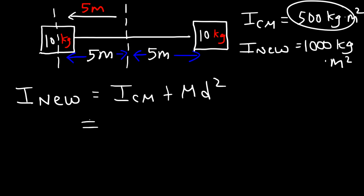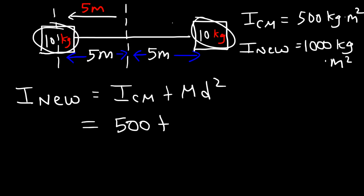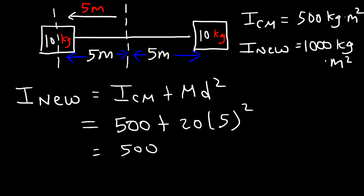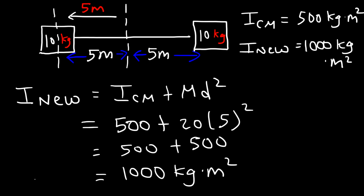So we have the old inertia value of 500. M represents the mass of the whole system, which is 10 plus 10, so that's 20. D is the displacement of the axis of rotation, so we displaced it by 5 meters. 5 squared is 25, and 25 times 20 is 500. So the new inertia value is 500 plus 500, which is 1000 kilogram times square meters — the same answer as before.